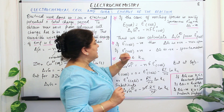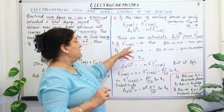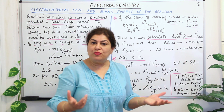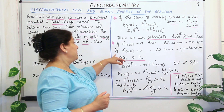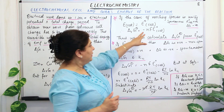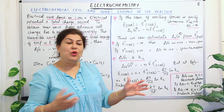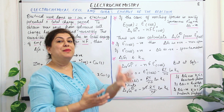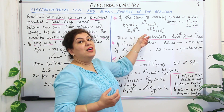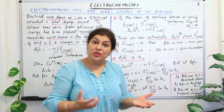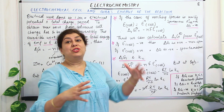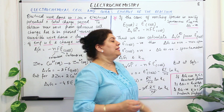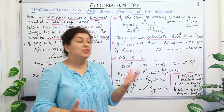When E° cell is negative, the reaction is non-spontaneous and delta G is positive, which confirms non-spontaneity. On the other hand, if E° cell is positive, then positive times the negative sign gives a negative delta RG, which indicates the reaction is spontaneous — consistent with the positive E° cell also showing spontaneity. So both confirm each other.